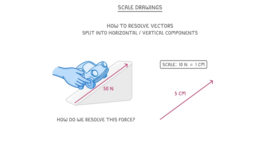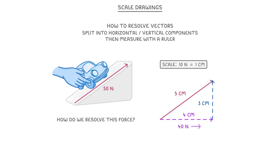Then all we have to do is draw a horizontal line down here and a vertical line up here, putting an arrow on each of them so that we know their directions. Then we just measure them with a ruler to find that they're 4 centimetres and 3 centimetres. And so looking at our scale, we can convert them to find that they must be a 40 newton force to the right and a 30 newton force upwards. So we've now resolved the 50 newton force into its horizontal and vertical components.